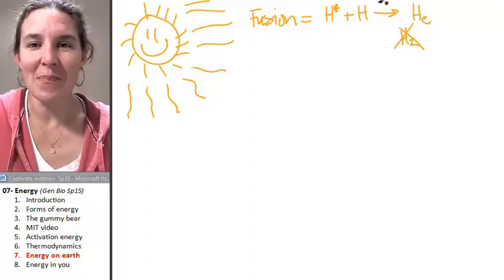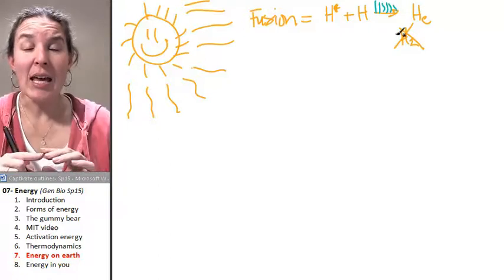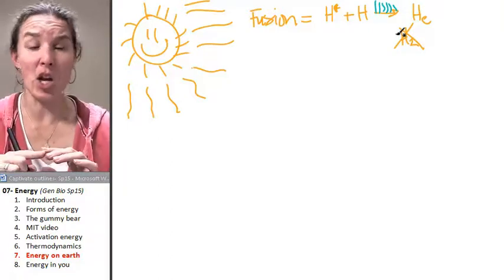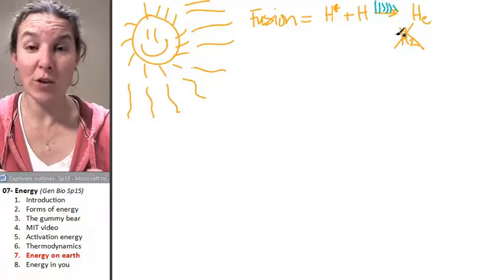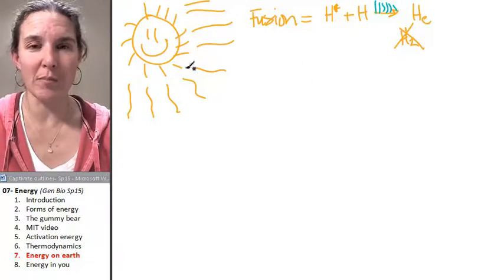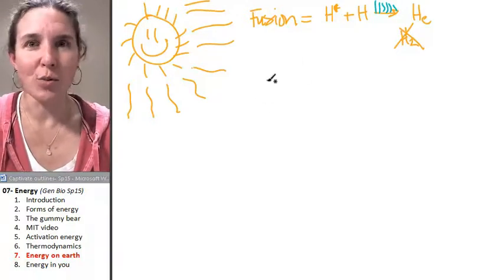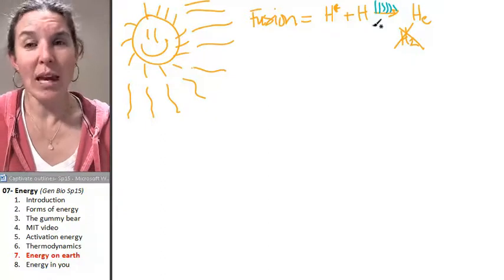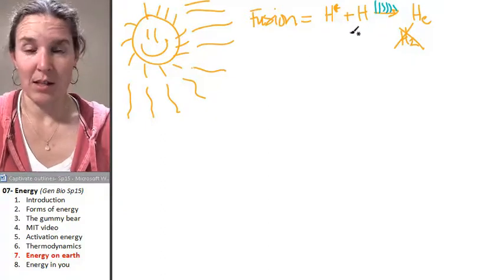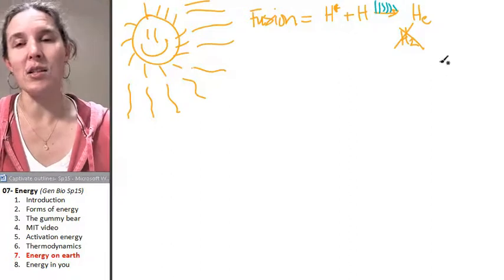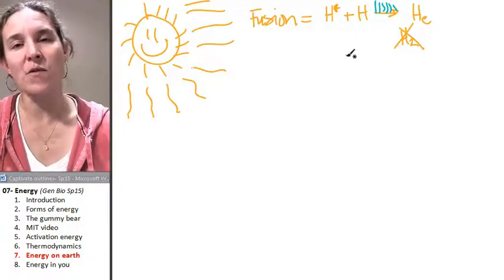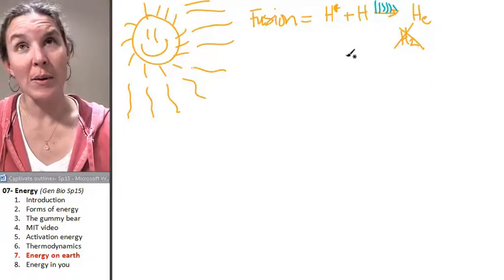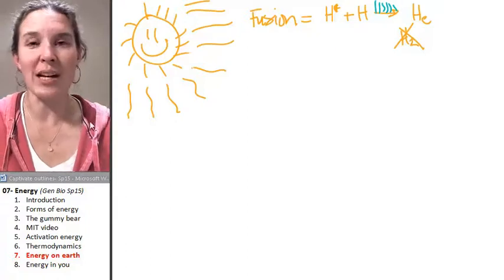If you did this in your body, you'd be looking like the sun, which you would not be very happy about. We can't really do this in our bodies, so we rely on the sun to do it for us. So the process of fusion happening in the sun is how we end up with light energy.